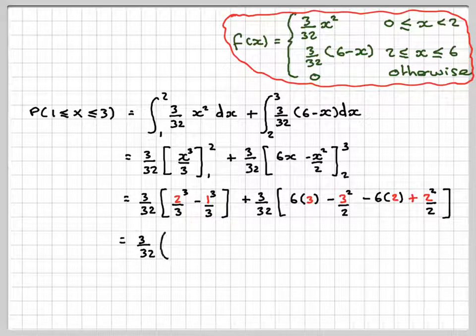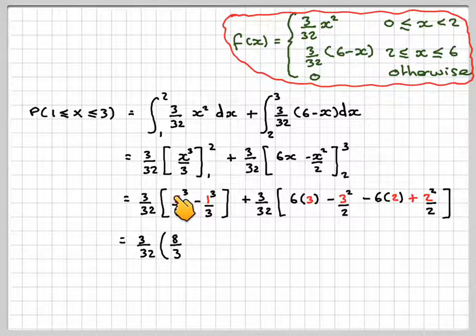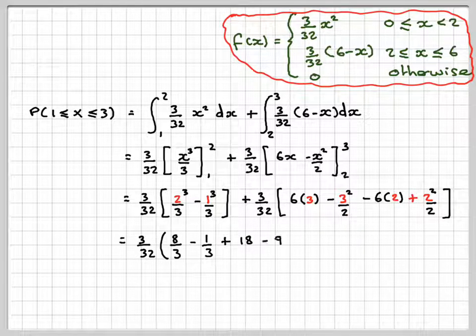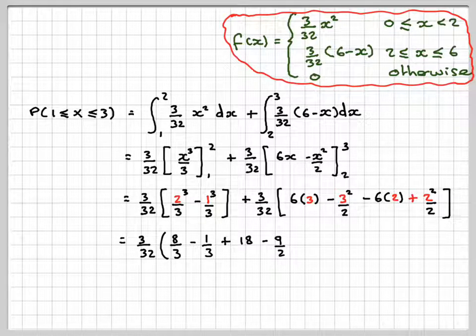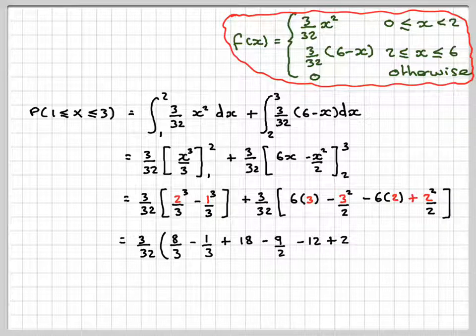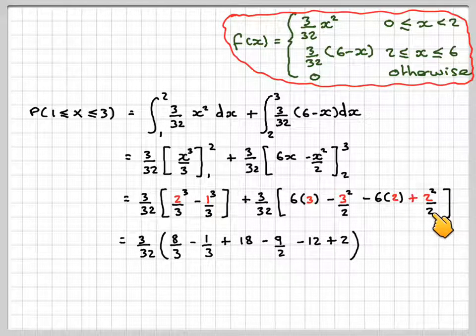So 3/32 is a common factor. So this becomes 8/3 minus 1/3 plus 18 minus 9/2, sorry, minus 6 times 2 which is minus 12 plus 2. 2² is 4, 4 divided by 2 is 2.